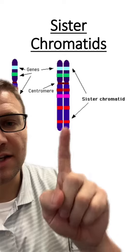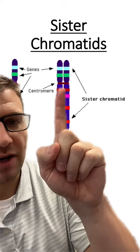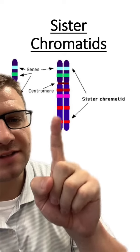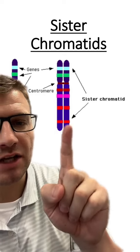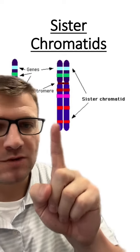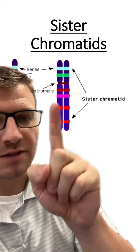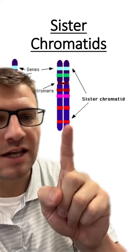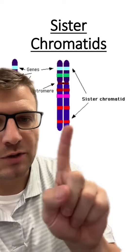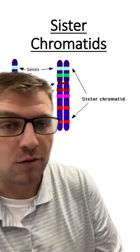Sister chromatids are attached at the centromere. These sister chromatids are going to have the same exact genetic code on both sides, so each arm of the sister chromatid is going to be genetically identical to each other. These are known as sister chromatids.